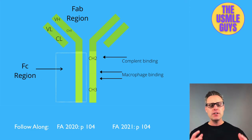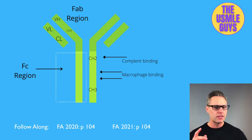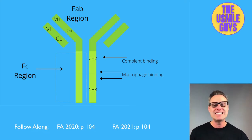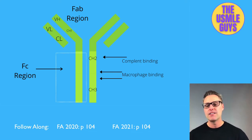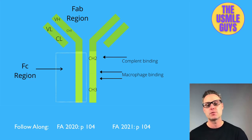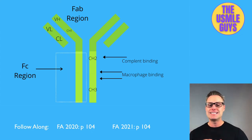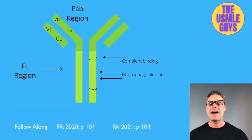Antibody diversity is established in three ways: first, via random recombination of light chain VJ or heavy chain VDJ genes; second, via random addition of nucleotides to DNA by terminal deoxynucleotidyl transferase; and third, via random recombination of heavy chains with light chains — a process that is antigen independent. Antibody specificity, which is antigen dependent, is established via isotype switching of the constant region, or somatic hypermutation and affinity maturation of the variable region.